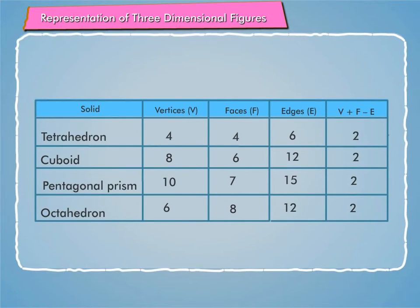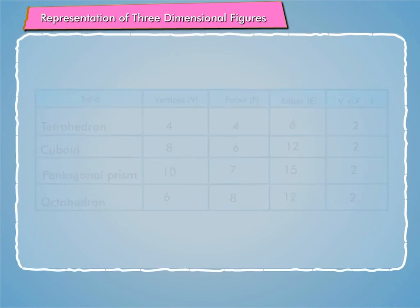That is tetrahedron, cuboid, pentagonal prism, and octahedron. The table given on the screen shows the number of faces, edges and vertices of different polyhedrons.